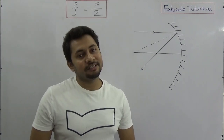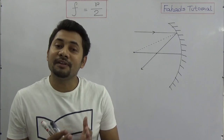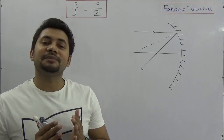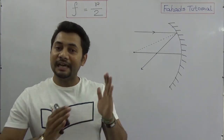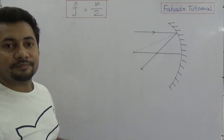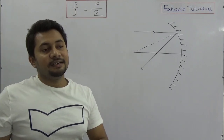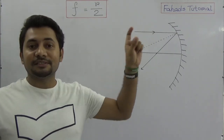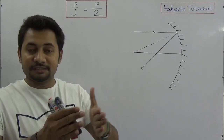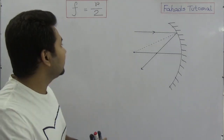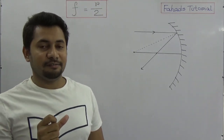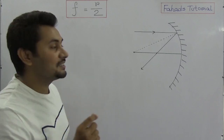Hello, welcome to the fourth tutorial of this video series about reflections of light. In this tutorial I will be explaining the relationship between the focal distance or focal length and the radius of curvature. Shortly, we can say this is the proof of f equal to R by 2. f is the focal length and R is the radius of curvature.